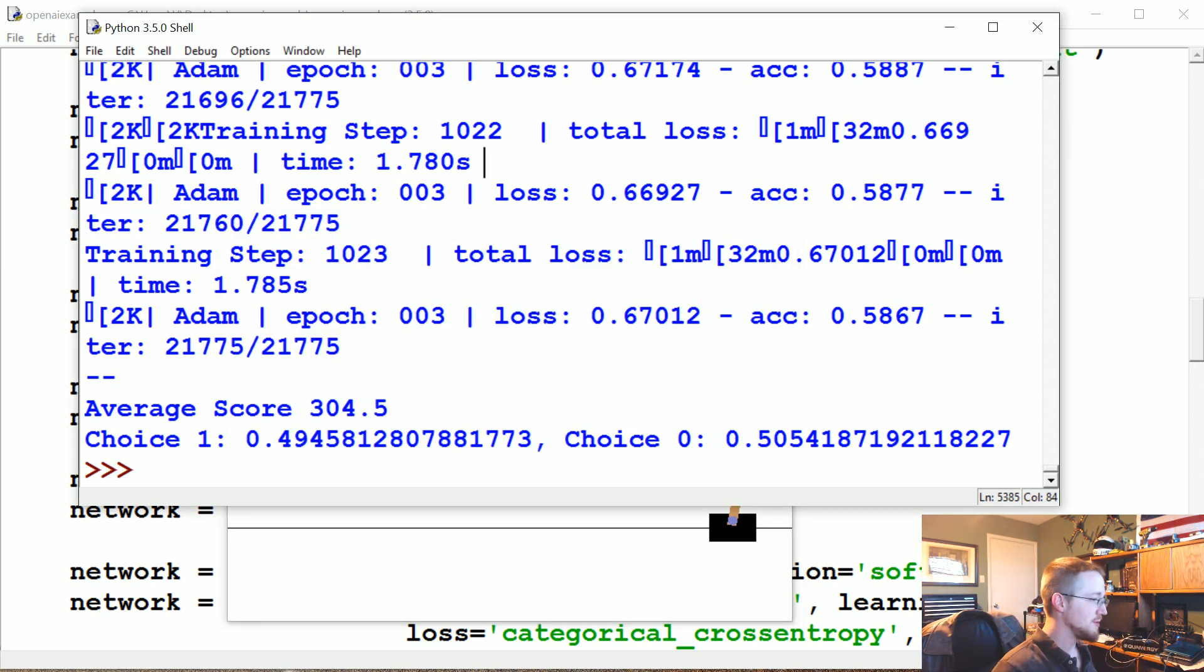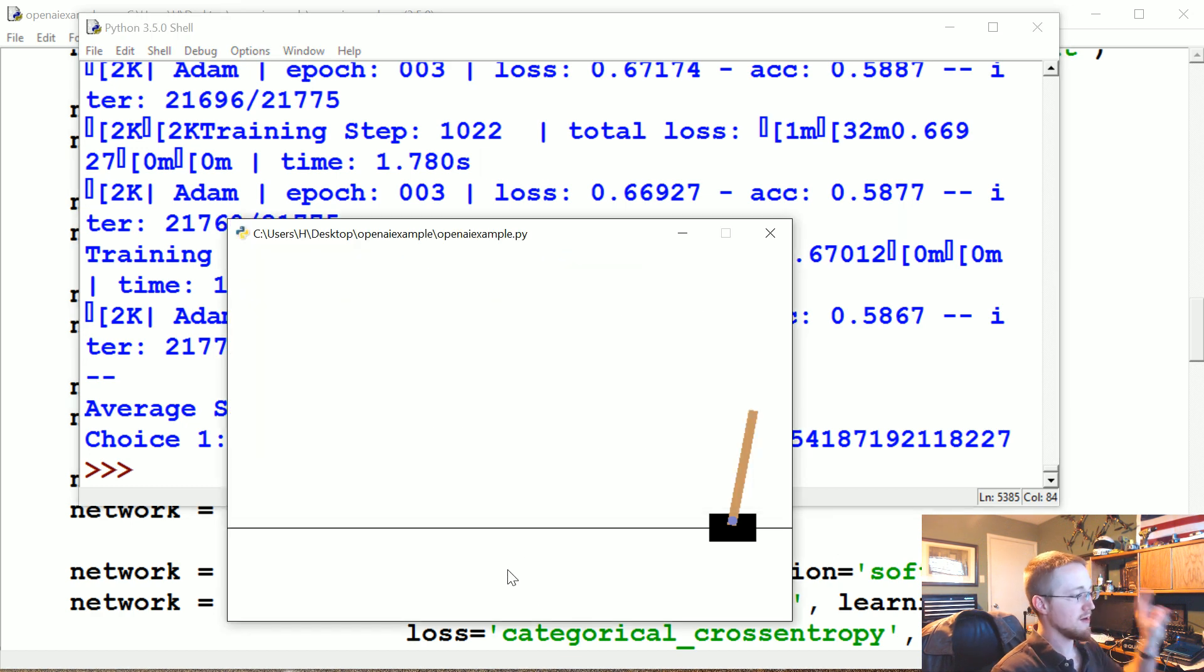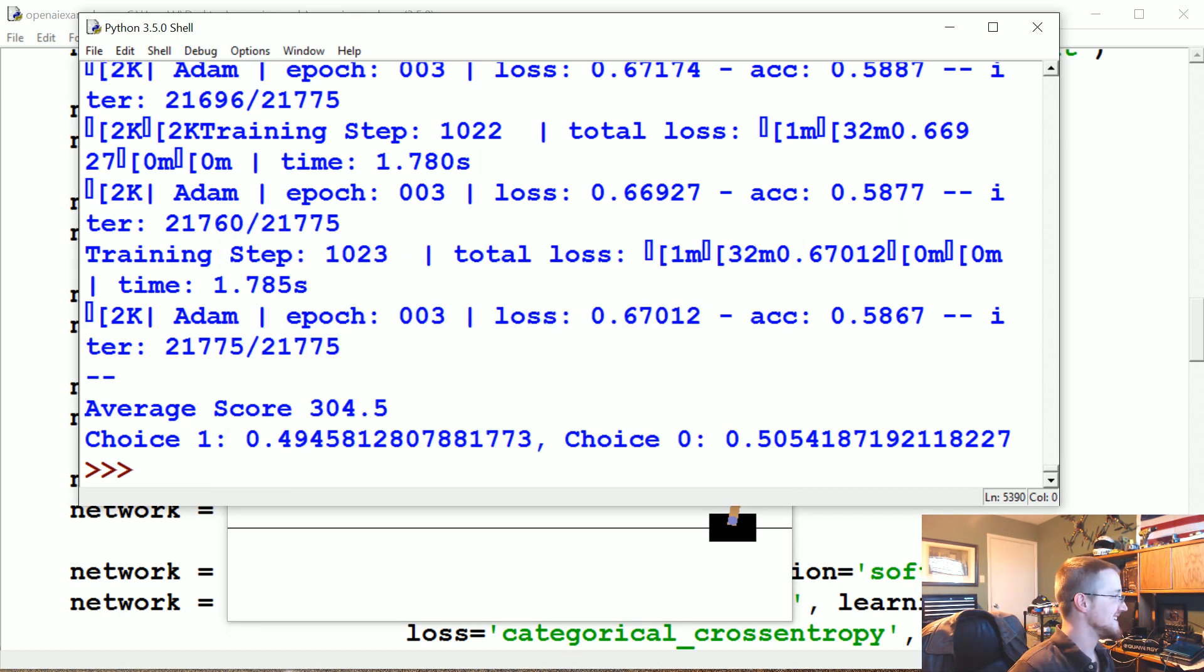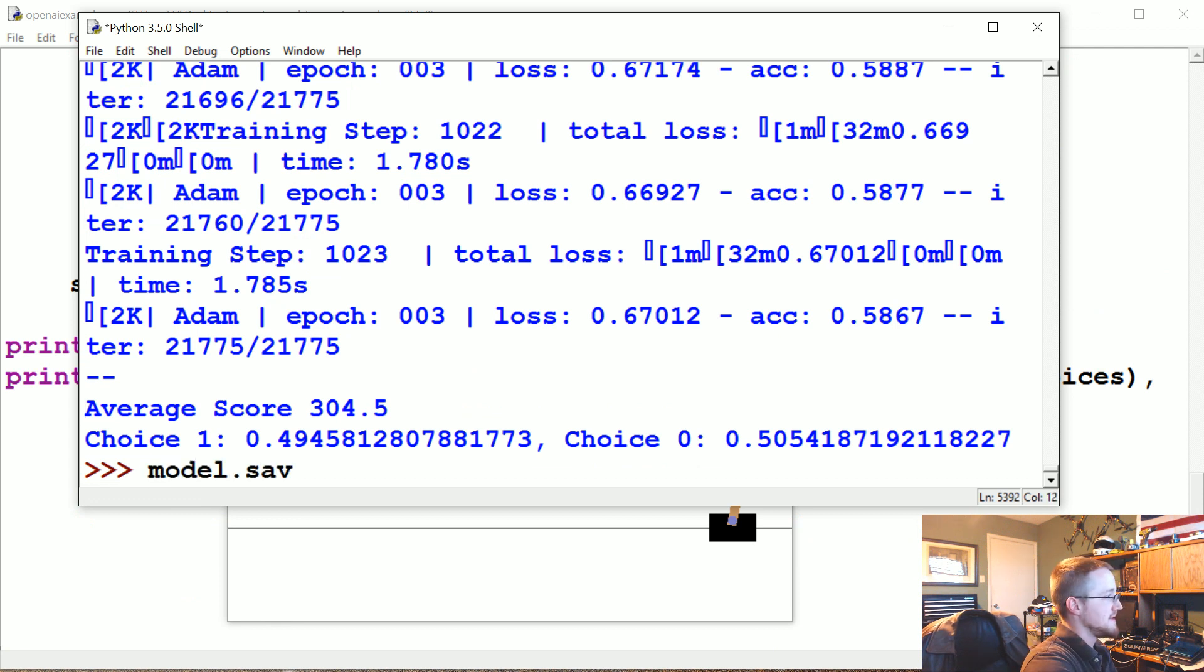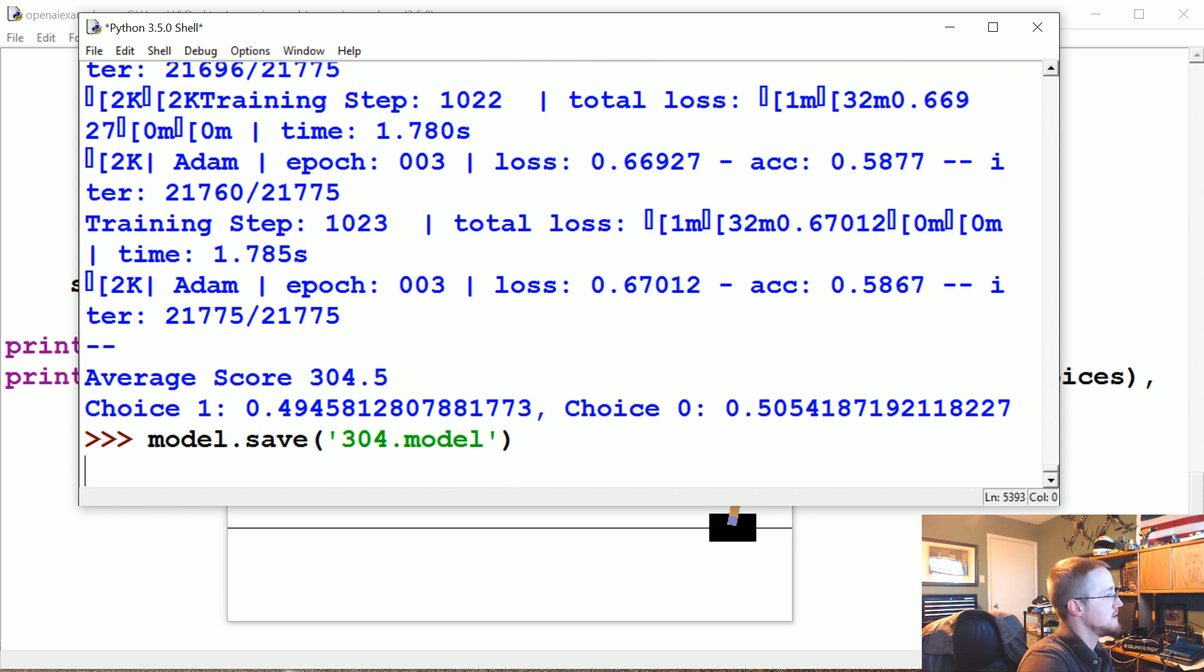I think we're going to get this one. Let's hope for above 200 average. I demand that we solve this. This is taking a while to get through 10 games so I'm pretty sure we got this thing. Boom, average score of 304. Now we solved. Okay, save that model. Let's see, we can save this model. Model.save, we'll call this 304.model.